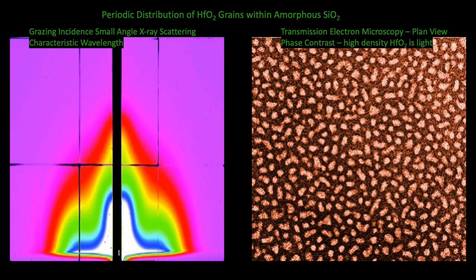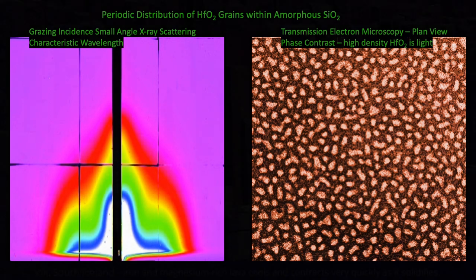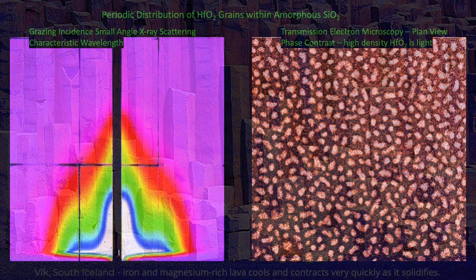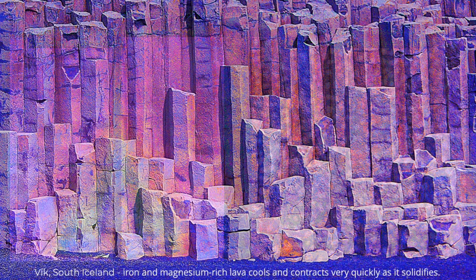This is a grazing incidence, small-angle x-ray scattering measurement. But what it shows is that there's a characteristic wavelength. There's a periodicity to the distribution of these isolated grains. I know of no other material in the literature that has this periodic columnar behavior.